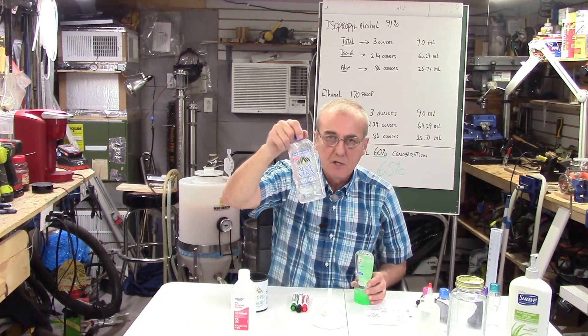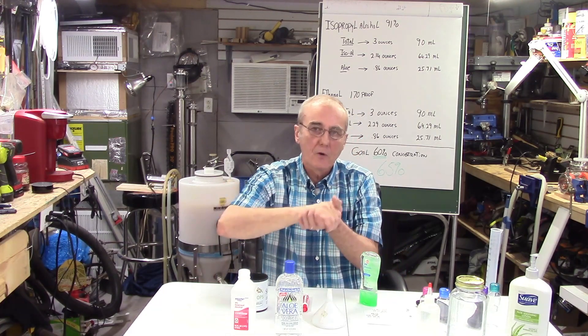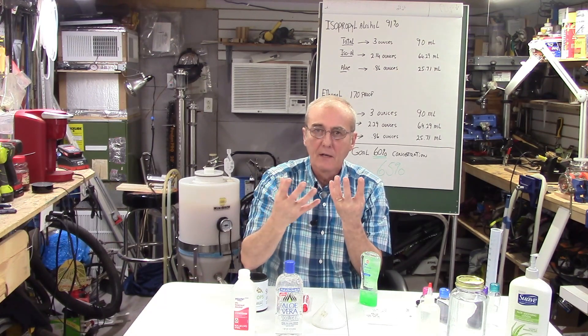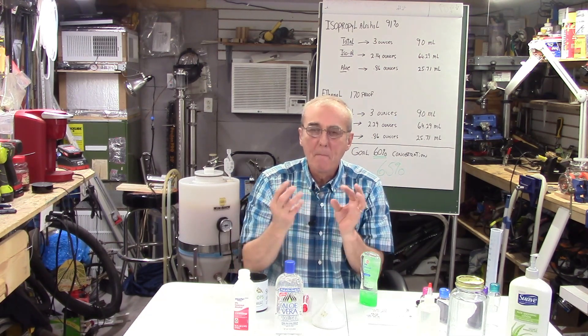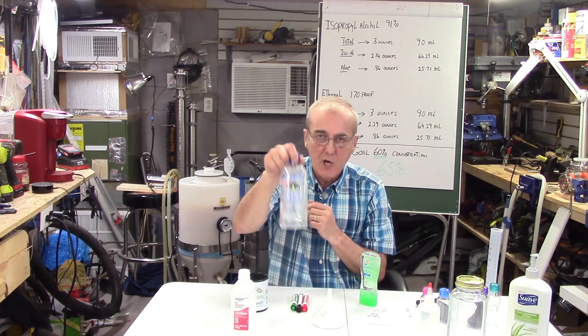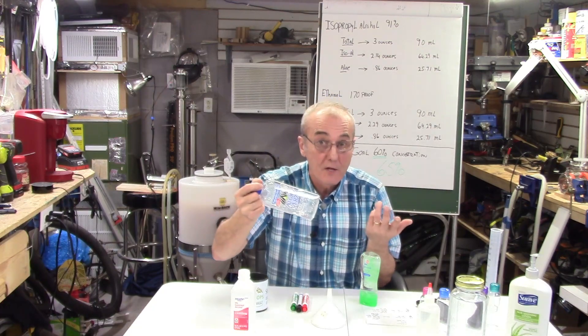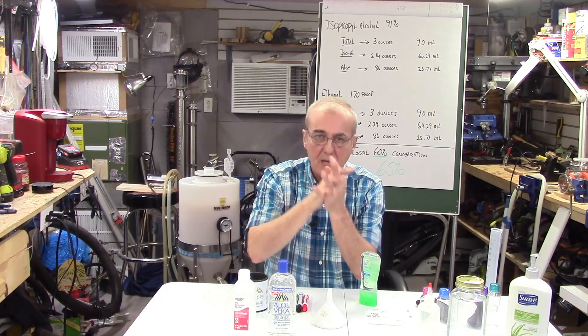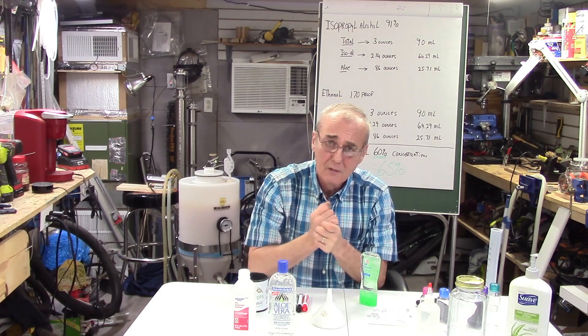The aloe vera, the gel, is a carrier. Because if you pour alcohol on your hands, alcohol is so thin, you know it's lighter than water, it evaporates very quickly. So it doesn't have time to do its function. So what you do is you mix it with a medium, and that medium being a gel. Well, an aloe vera is good because it softens the skin at the same time. I mean there are other things you can use, but that's the purpose of having this, is so that it remains in contact with your skin for a period of time in which the alcohol has an opportunity to do what it's supposed to do.